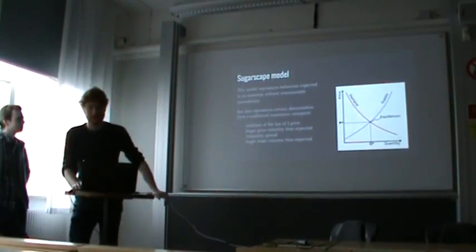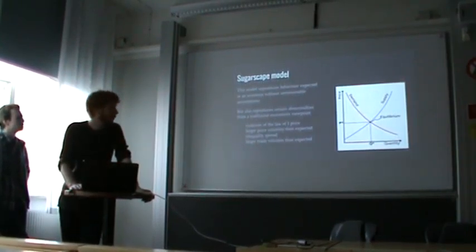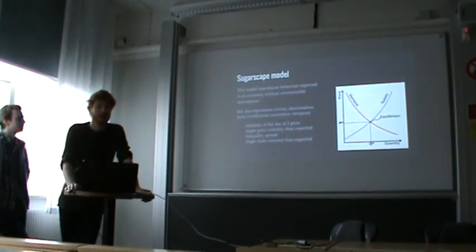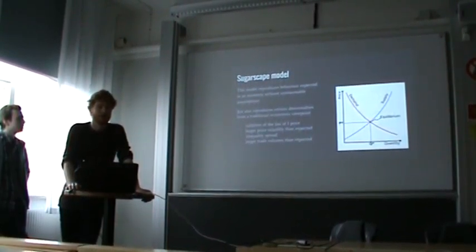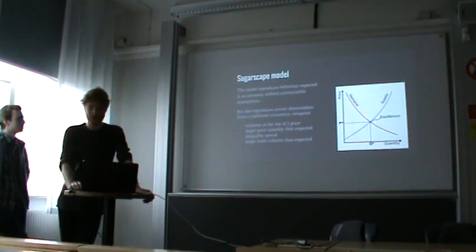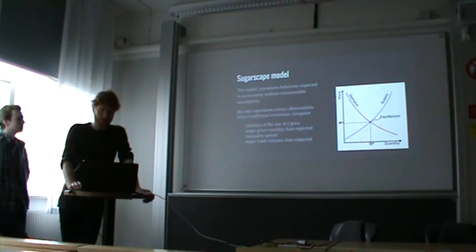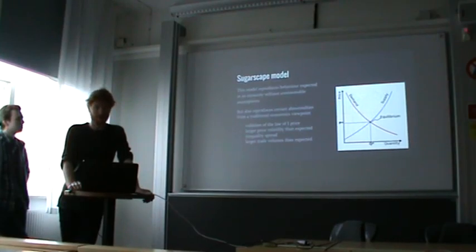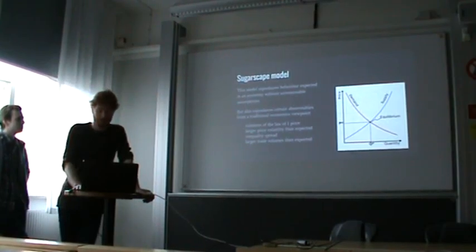This model reproduces a lot of expected behavior within economic systems. Very interestingly, if you perform traditional analysis of this model, you find a lot of abnormalities that you also find when doing traditional economic analysis of the real world — such as violation of the law of one price. The price fluctuates a lot depending on where on the island you're trading. Also, the inequality spread is much larger than you'd get from a traditional viewpoint, and volumes of trade are also larger than traditional analysis would suggest.